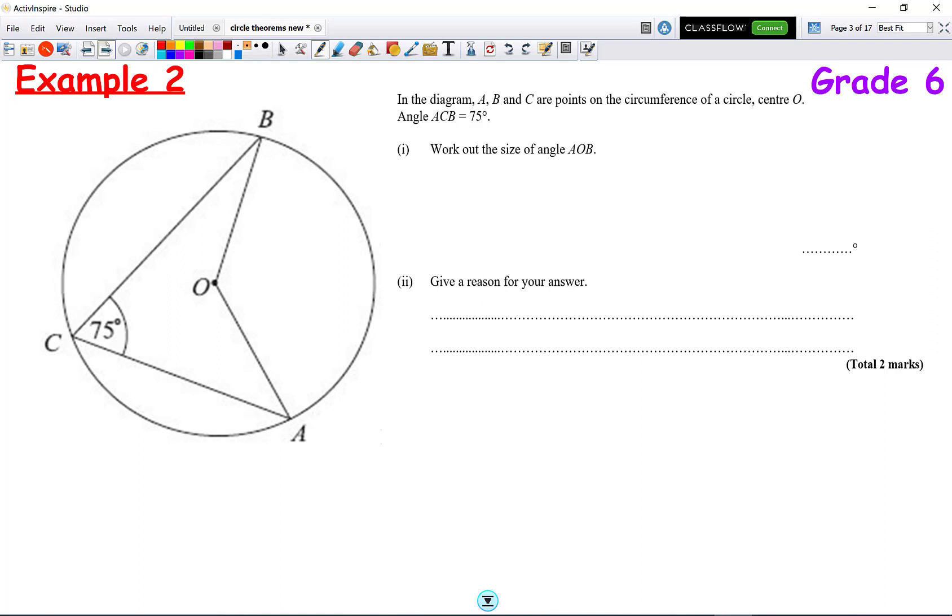Welcome back. Okay. So, the question says that the angle at the circumference is 75, and we want to work out angle AOB, which is the angle at the centre. Well, we know that the angle at the centre is twice the angle at the circumference. So, it's going to be double of 75, which is 150.